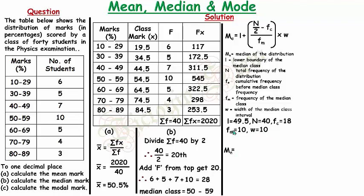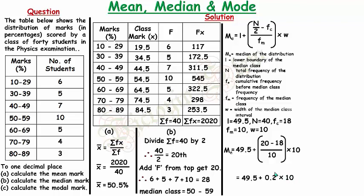Substituting into the formula: Mₑ = 49.5 + [(20−18)/10] × 10. That gives 49.5 + [2/10 × 10] = 49.5 + 0.2×10 = 49.5 + 2 = 51.5. So the median mark is 51.5. The mean mark is 50.5 and the median mark is 51.5. Now moving to part (c).